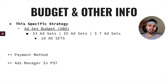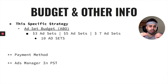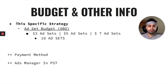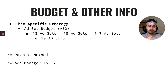Before we move into the product and ads manager, I want to give you guys a rundown — a game plan in terms of what to expect. For this specific strategy, we are going to be dealing with a lower budget, meaning $3 ad sets, $5 ad sets, or $7 ad sets. For this specific example, I'm going to be using $5 ad sets. It is still very possible to deal with $5 ad sets and still succeed in your advertising game. We are also going to have 10 ad sets, so we'll only be spending about $50 a day.